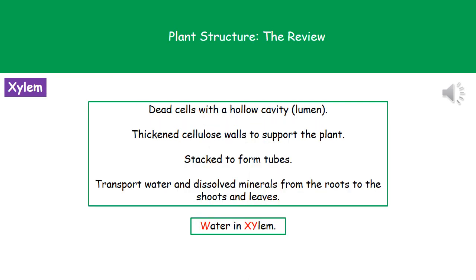Thinking about xylem first: these are dead cells with a hollow cavity in the middle called the lumen. The reason they're dead is because the walls have become very thickened with cellulose, and the whole reason behind that is to support the plant. All of these dead cells are stacked end-to-end to form tubes. Xylem transports water — the easiest way to remember that is just think of the alphabet: W-X-Y, water in xylem. It also transports dissolved minerals because they're carried in the water, moving from the roots to the shoots and leaves.